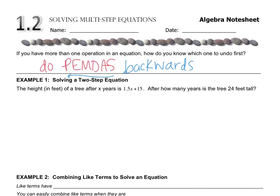So let's look at example 1. The height of a tree after x years is 1.5x plus 15. After how many years is the tree 24 feet tall? So we're looking for where the expression for the number of feet equals the actual quantity that we want. So the equation that we're going to set up is 1.5x plus 15 equals 24.